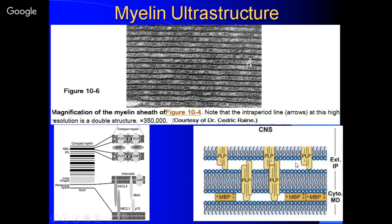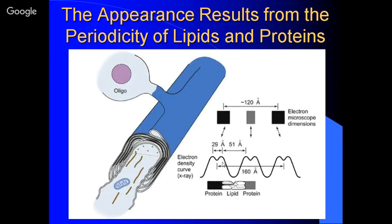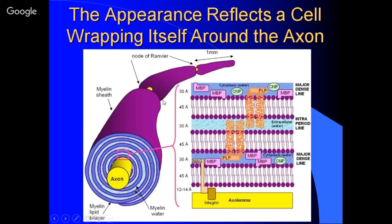That's how it shows up on EM. Proteins are the densest, electron-dense material. Water and lipid are much less so, and that's what gives rise to these lines. When you look at the whole thing, you're going to have this repeating structure: cell membrane, cell membrane, intracellular, cell membrane, cell membrane — with extracellular space containing water in between.